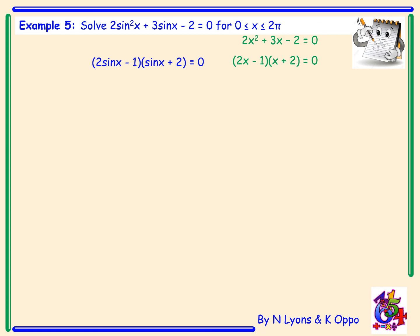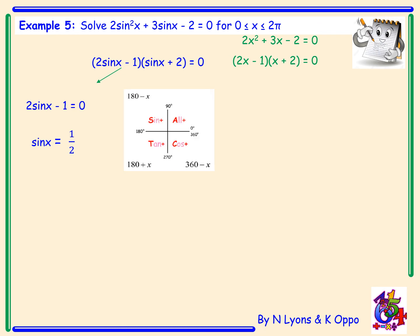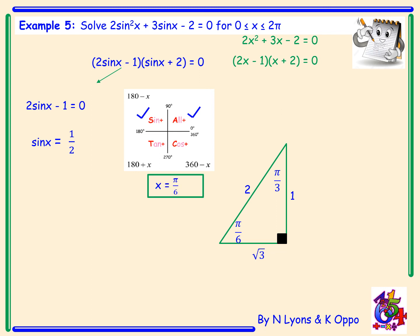Next, split the brackets. From 2sin x − 1 = 0, rearranging gives sin x = 1/2. From our CAST diagram, sin x is positive, so we look in the first two quadrants. 1/2 is an exact value; drawing our exact value triangle in radian terms with opposite 1 and hypotenuse 2 gives π/6. The first quadrant angle is π/6. The second quadrant angle is π − π/6 = 6π/6 − π/6 = 5π/6.